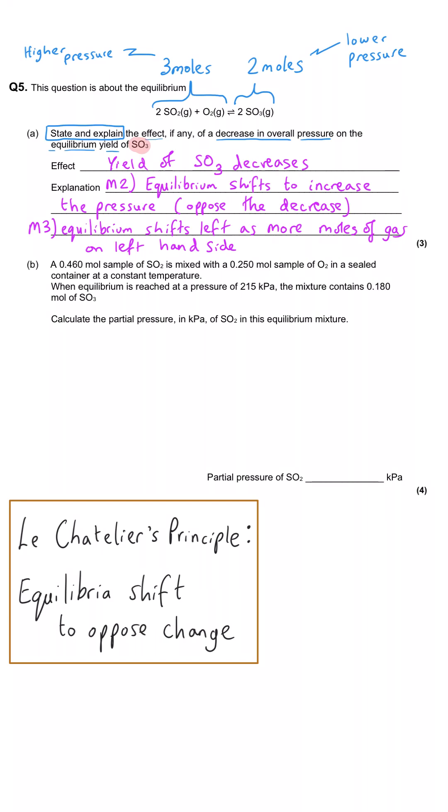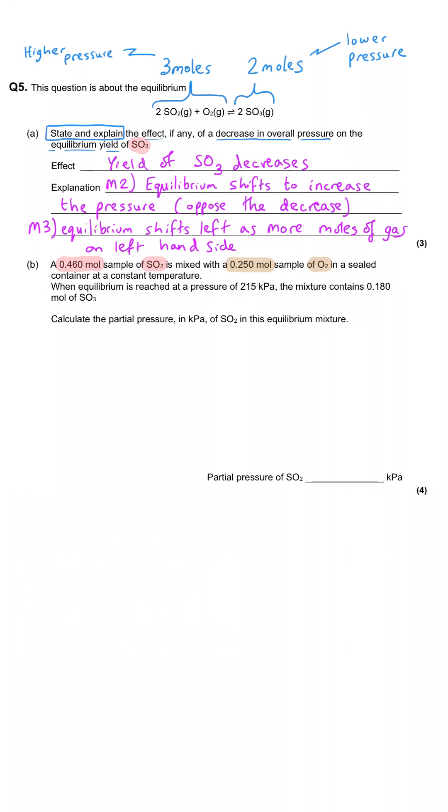In part B, we're told that a 0.460 mole sample of SO2 is mixed with a 0.25 mole sample of O2 in a sealed container, that means it's a closed system, at a constant temperature. When equilibrium is reached at a pressure of 215 kilopascals, the mixture contains 0.180 moles of SO3. And we're commanded to calculate the partial pressure in kilopascals of SO2 in the equilibrium mixture.